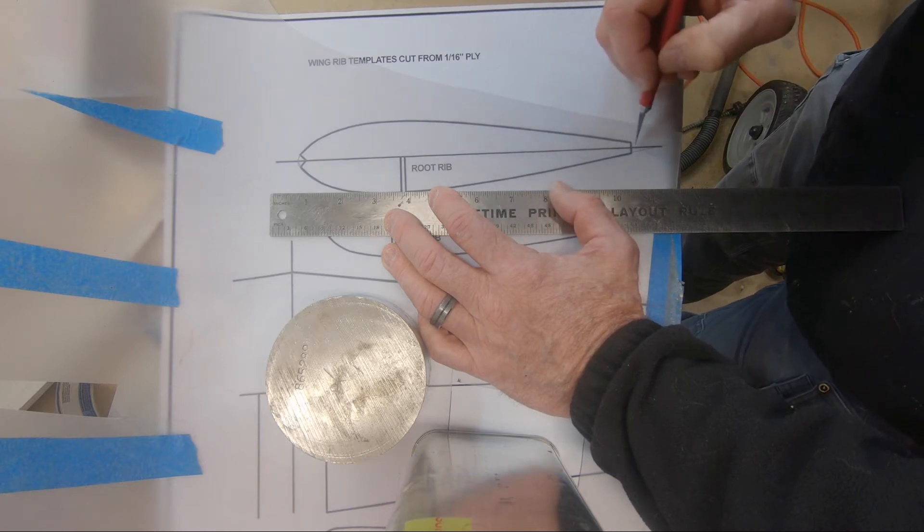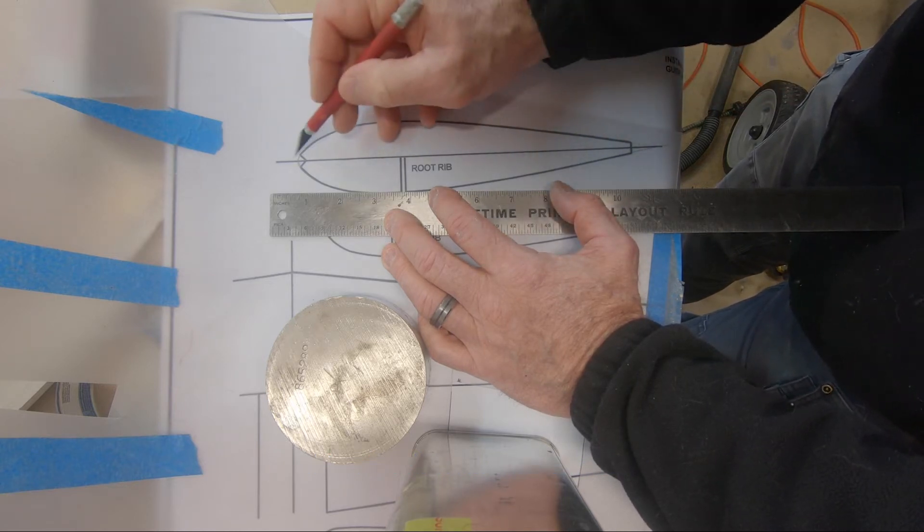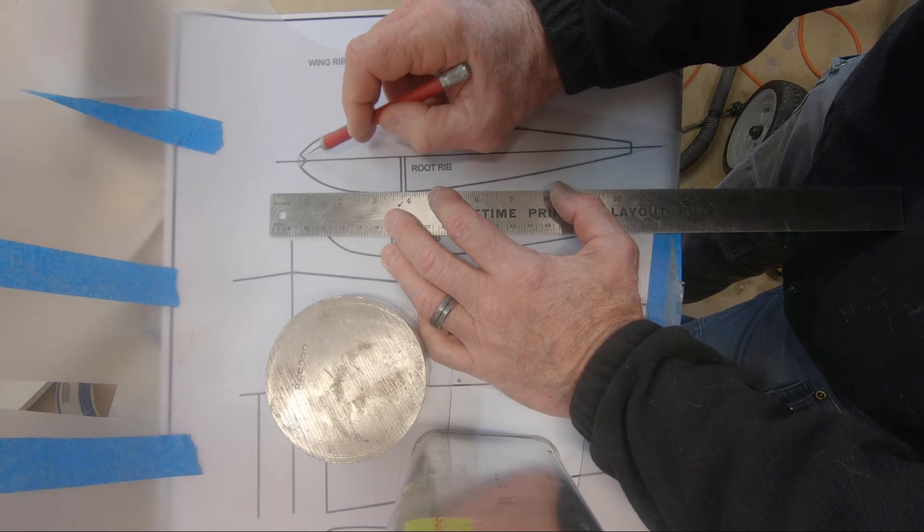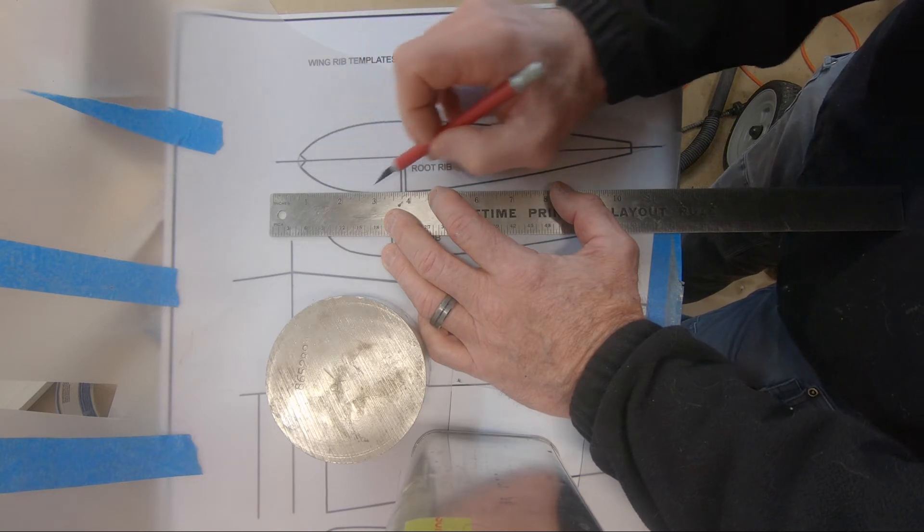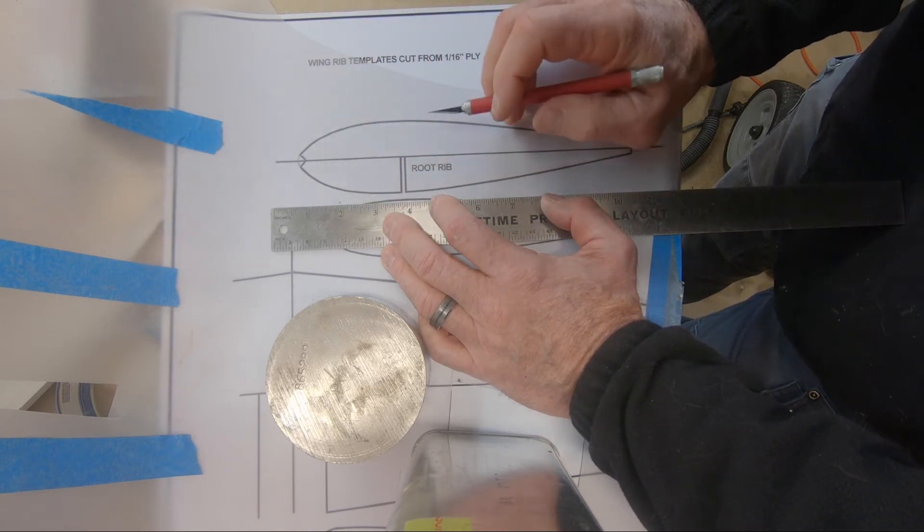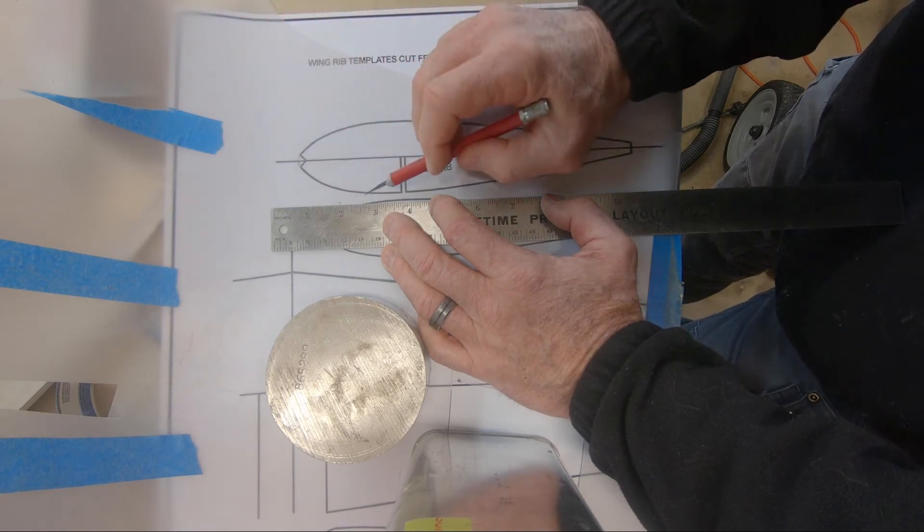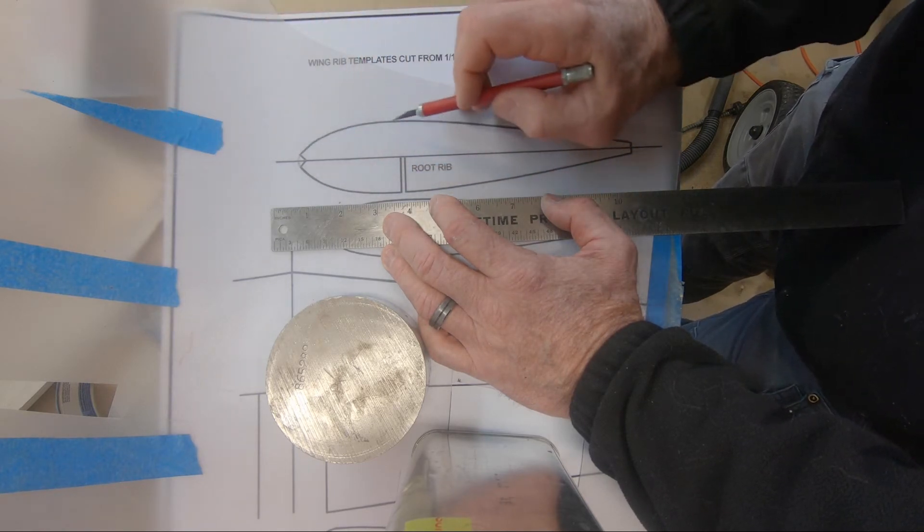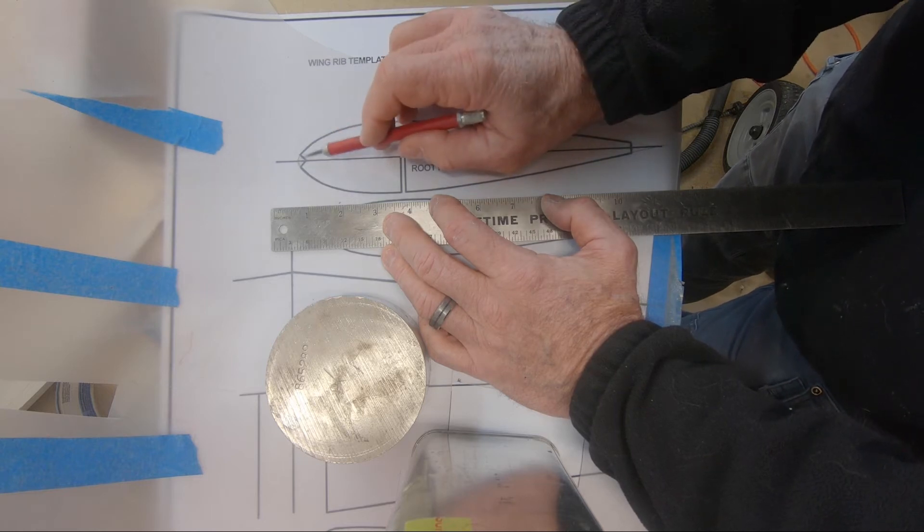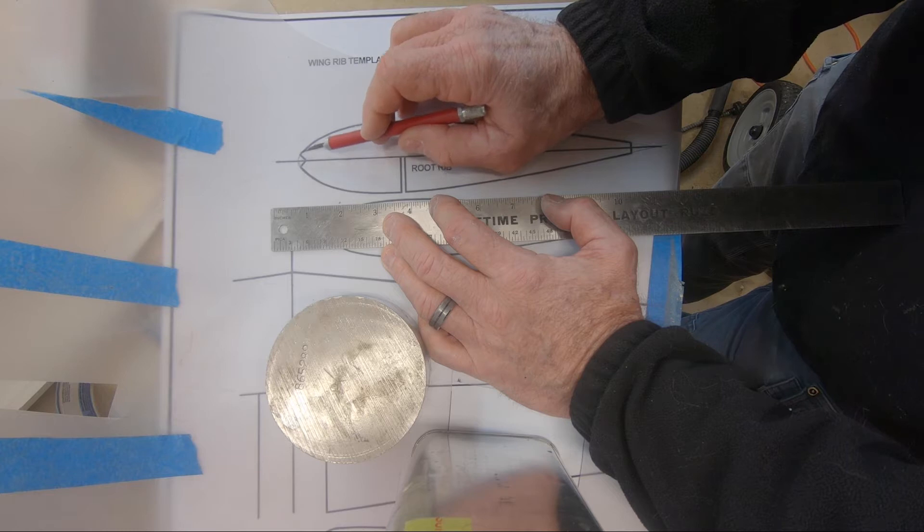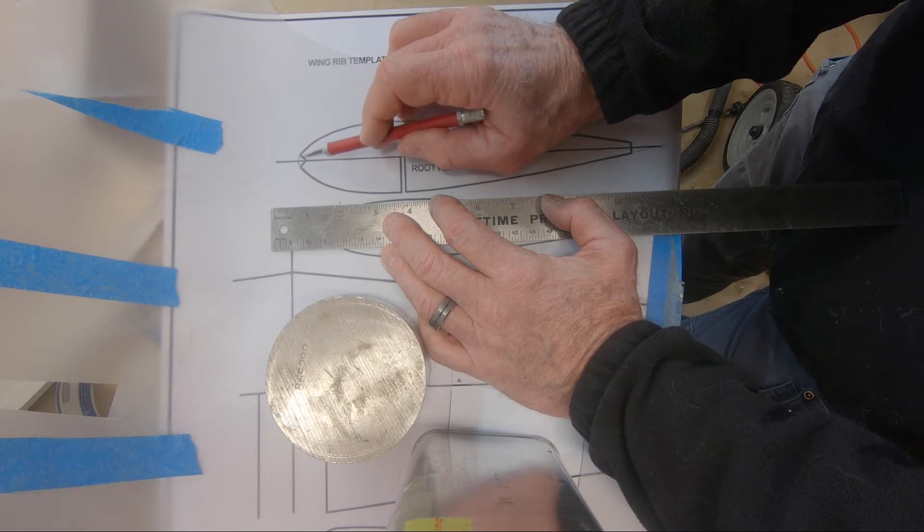What I've done is measured the trailing edge back here. And the leading edge is going to be a rolled balsa. It's going to be formed on a shuck and then laid over the top of the foam. So there's not going to be a leading edge quarter inch strip of wood here.